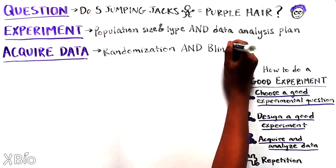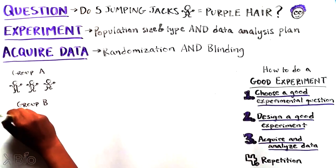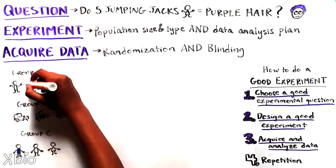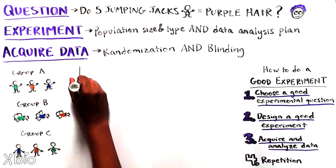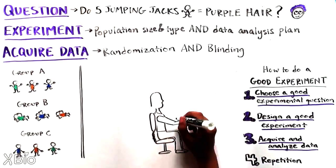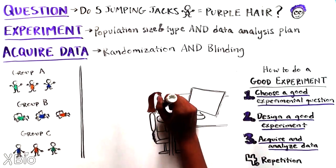The second is blinding. This means that both the participants and the experimenters don't know who is in which group where possible. In this case, it's pretty tricky as you can't hide from the participants which exercise they are doing. But once the data has been acquired, it can be labeled in a way that means the groups are hidden to those doing analysis.